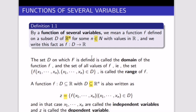By a function of several variables we mean a function f defined on a subset D of R^n for some n that is an element of the natural numbers, with values in R. We write this as f: D → R, where D maps onto the real numbers.